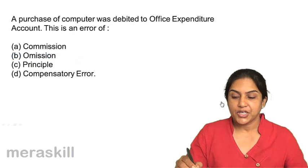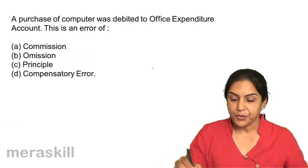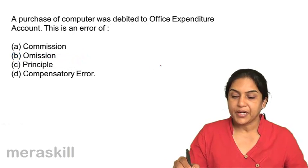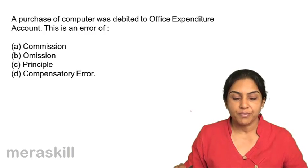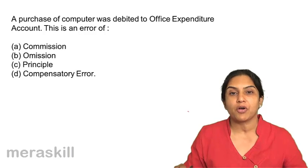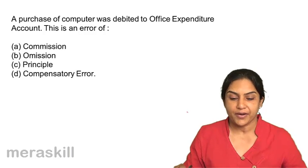A purchase of a computer debited to office expenditure account is: A. Error of commission, B. Omission, C. Principle, or D. Compensatory error.